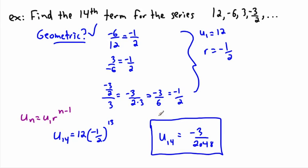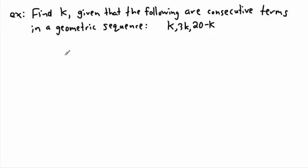So that may have looked really complicated, but that's how we can solve this. Now I'm going to give you one that looks totally unfamiliar. Here we're saying find K. Given that the following are consecutive terms in a geometric sequence. First of all, it helps to know what consecutive means.